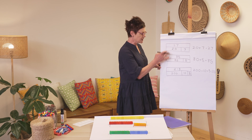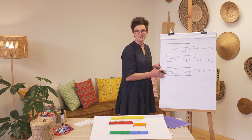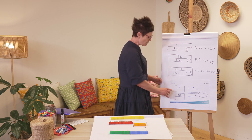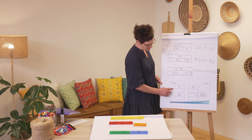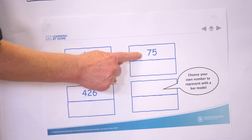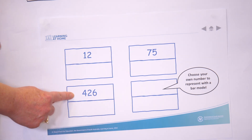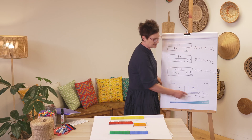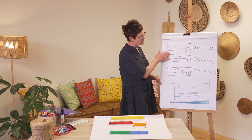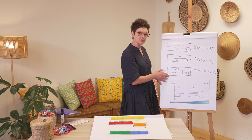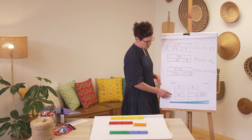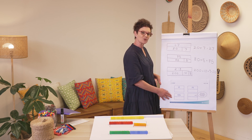There we have it — three beautiful bar models to learn from. Now it's your turn! Here are some bar models for you to do by yourself with the whole numbers 12, 75, 426, and there's a 'choose your own number' option too. Don't forget: we have the whole and the parts underneath. Press pause and add these to your learning book.